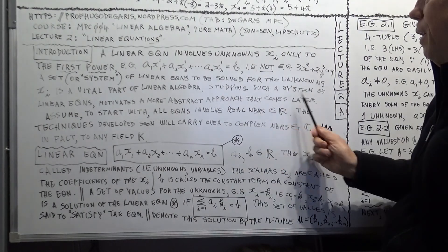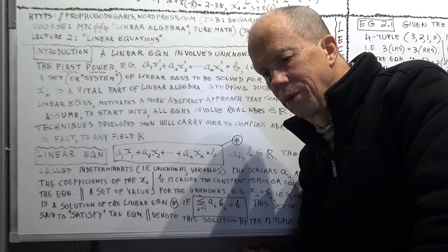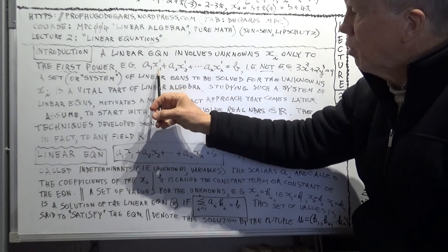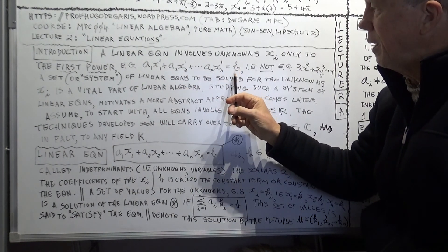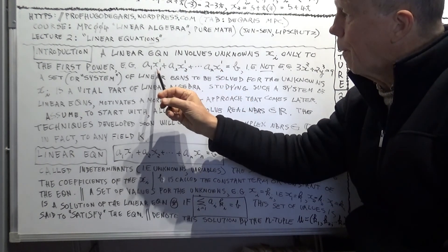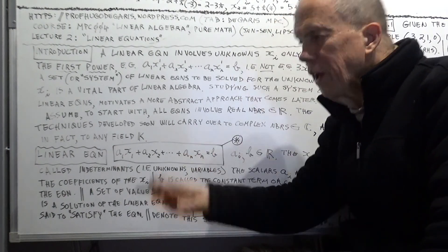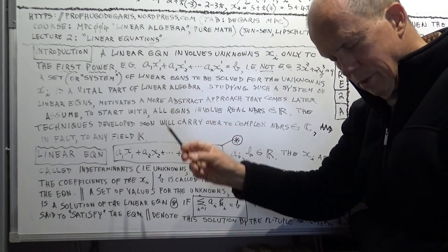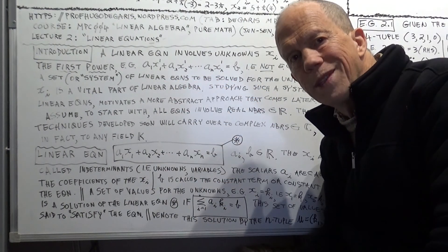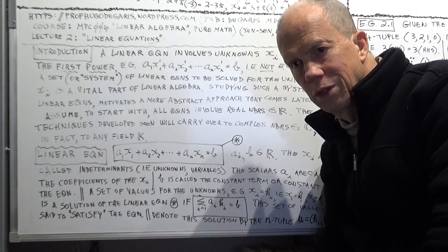By studying this system of linear equations, we will develop techniques on how to solve these equations — in other words, find actual numbers for these unknowns that satisfy the equations. You plug in actual numbers for these x's, and the left-hand side will equal the right-hand side. You have n of these numbers, forming an n-tuple. If plugging in the components of that n-tuple makes the left-hand side equal the right-hand side, that n-tuple is a solution of this equation.